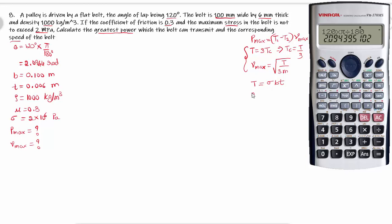Mass m is equal to density into b into t. This is mass per unit length. Mass per unit length m is equal to rho into b into t, where rho is density, b is breadth, and t is thickness.